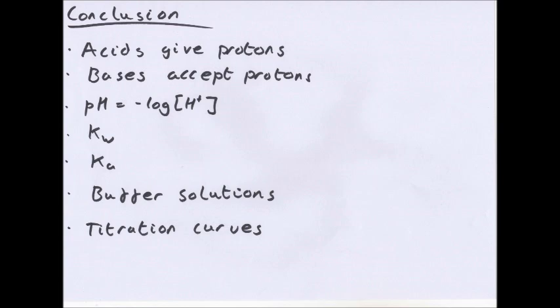To summarise: an acid donates a proton, a base accepts protons. pH = −log[H+]. Know Kw, Ka, how buffer solutions work and calculations with them, and be able to interpret titration curves. Practice the calculations, use the book, and email with any examples you don't understand. Thank you for watching.